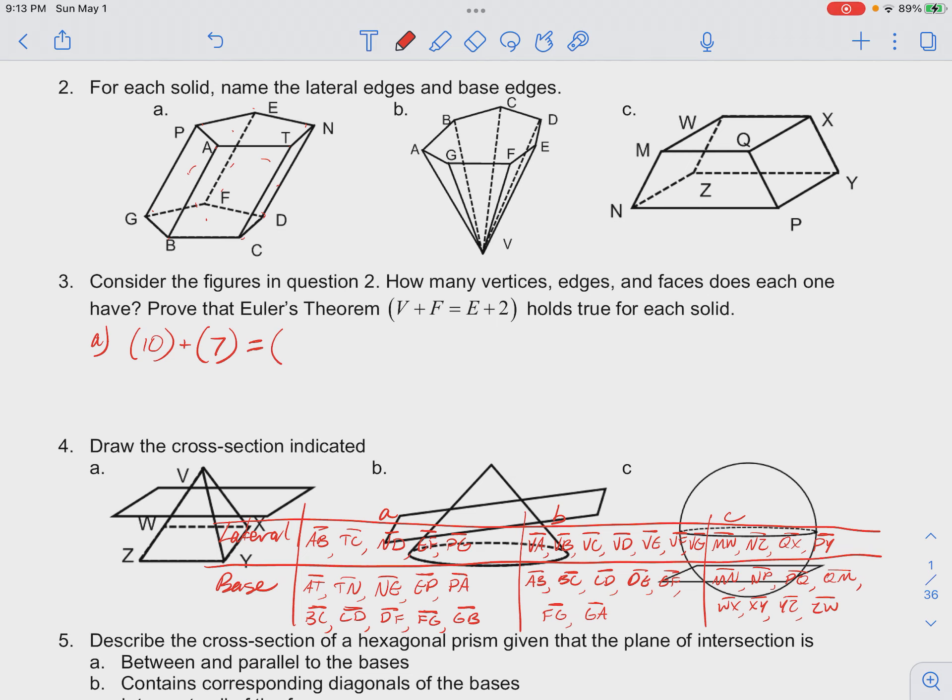Equals our edges. So we wrote our edges before: we have 1, 2, 3, 4, 5, then we have 6, 7, 8, 9, 10, 11, 12, 13, 14, 15 edges plus 2. And we see that the right and left hand side both simplify to 17, so this is true.